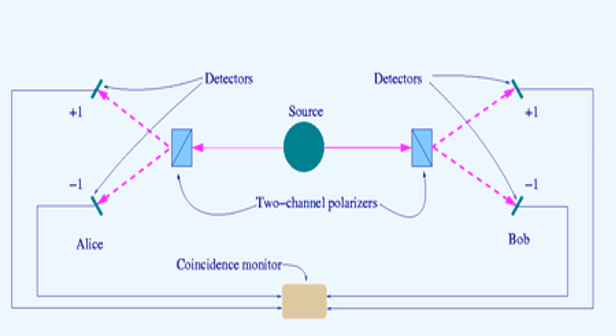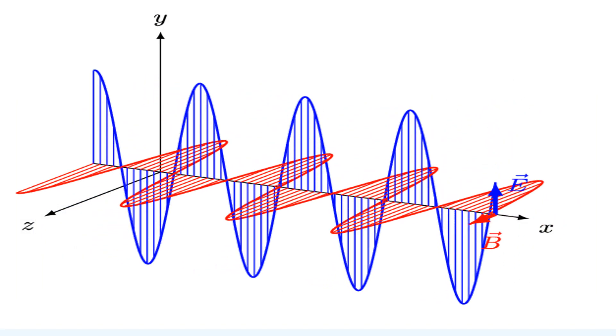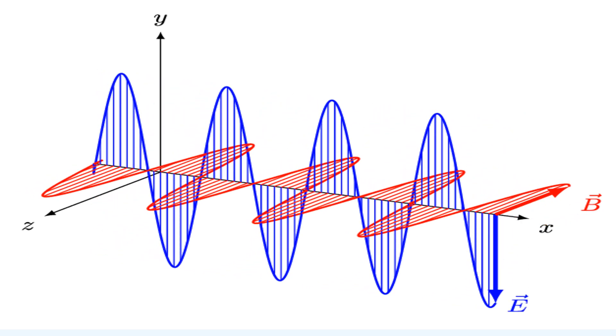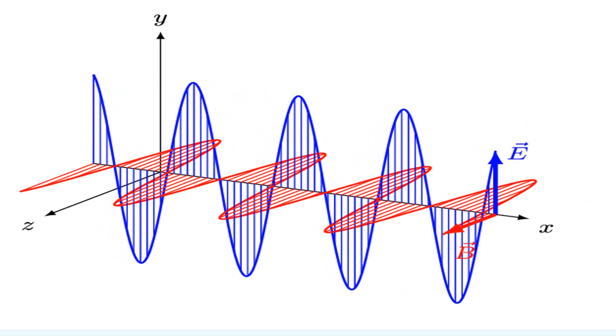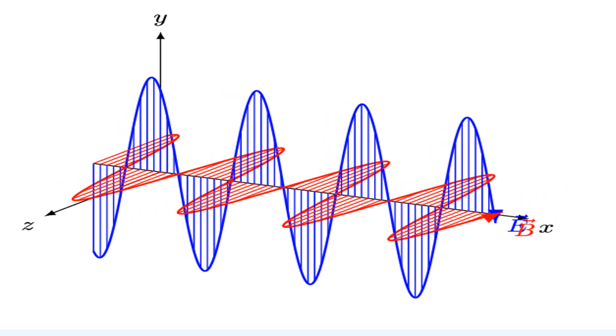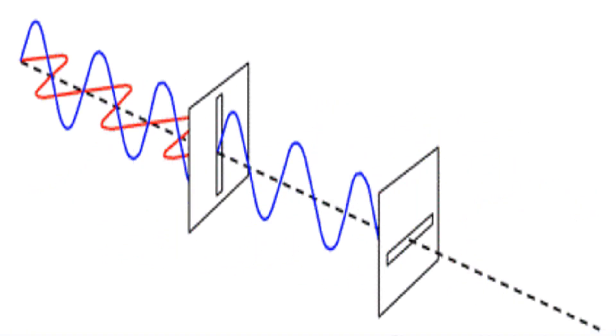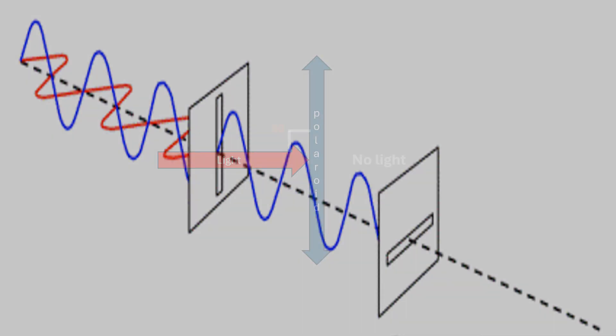Imagine you have a beam of light. This light has a property called polarization, which allows the light to go through some filters but not others. For example, if you pass this light through a vertical filter, a vertically polarized light emerges from the other side. When you pass this vertically polarized light through a horizontal filter, which is perpendicular to the vertical one, no light goes through.